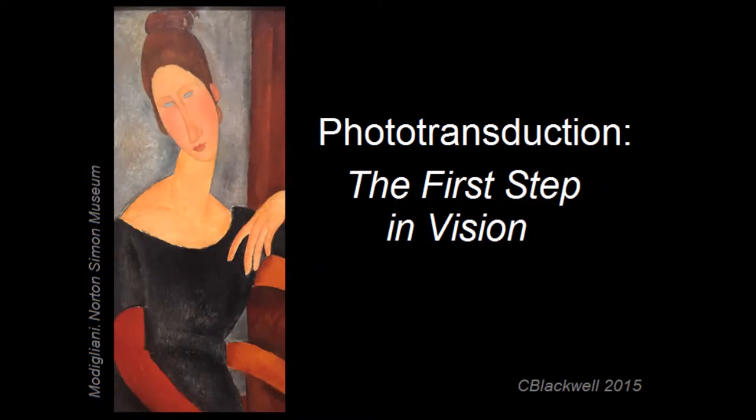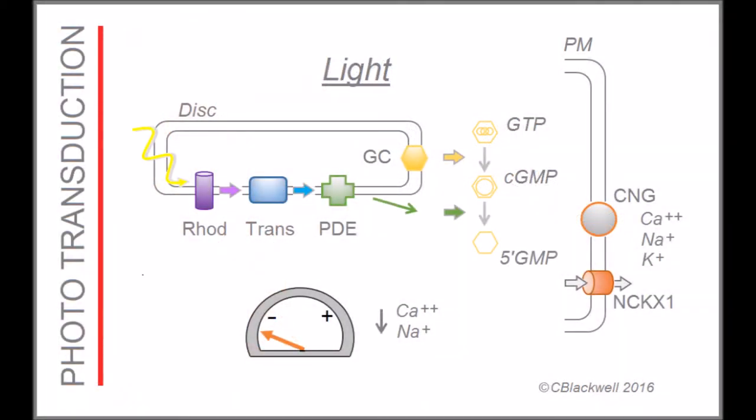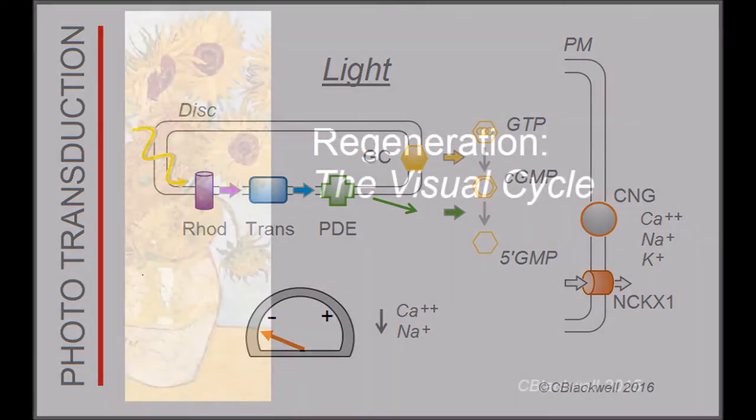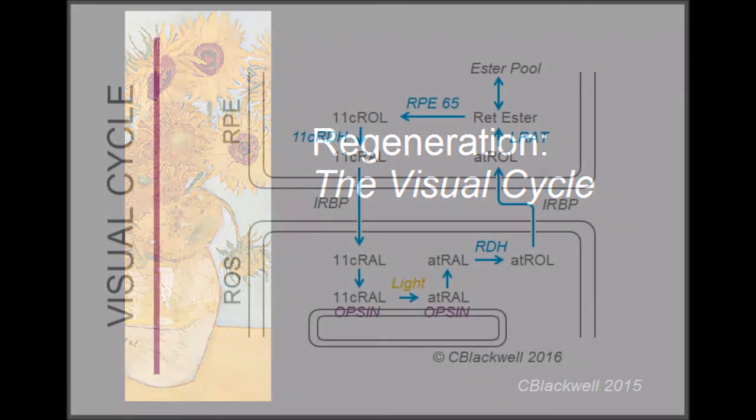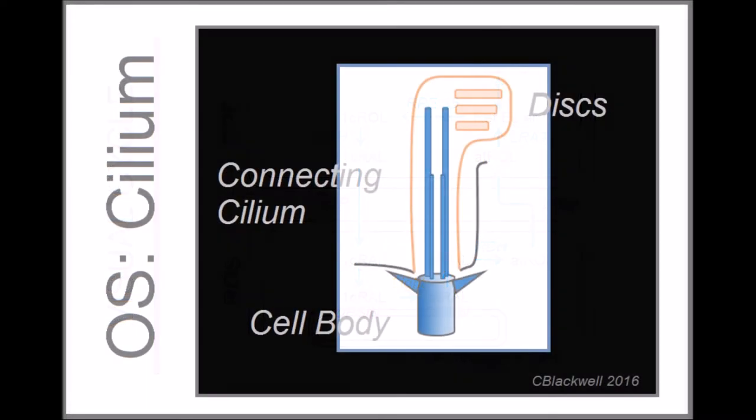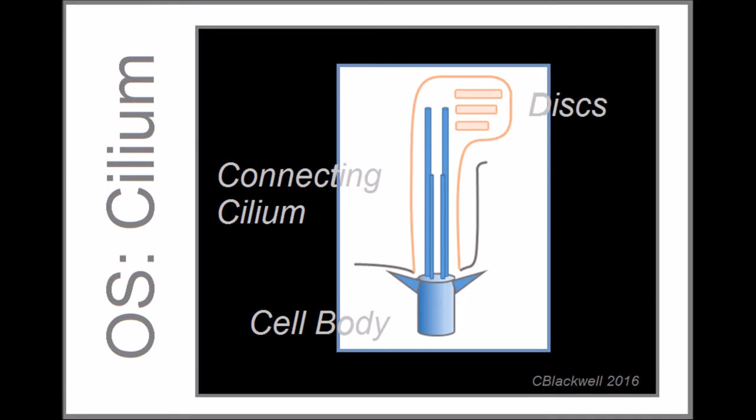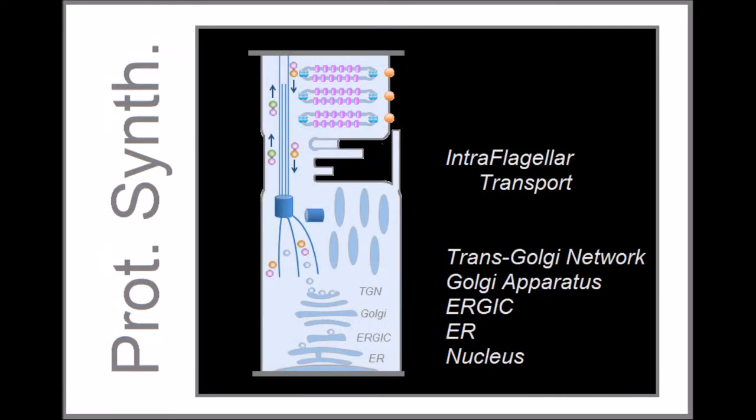This is a companion to the previous two videos in which we covered phototransduction, the mechanism of how light is registered within the photoreceptor cell, and the visual cycle, how the photosensitive retinal is recycled. In investigating how the photoreceptor works, we are going to delve into some important and really interesting cell biology.